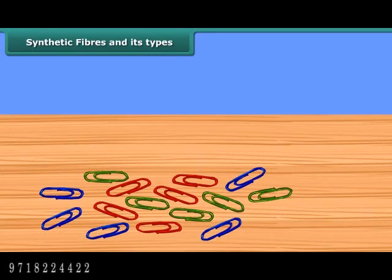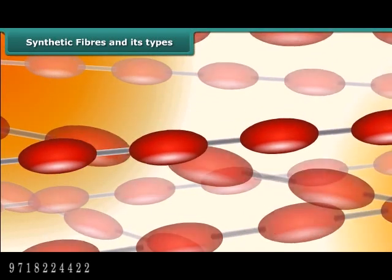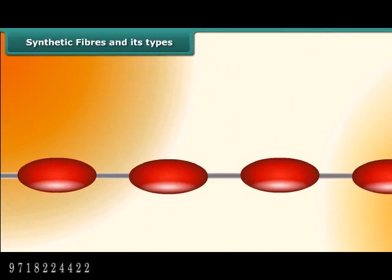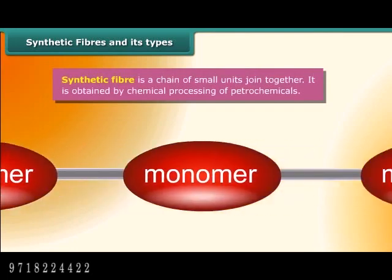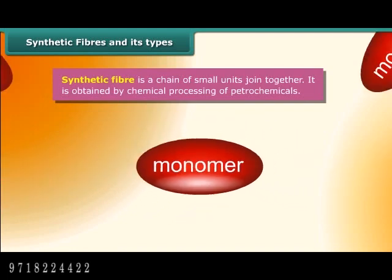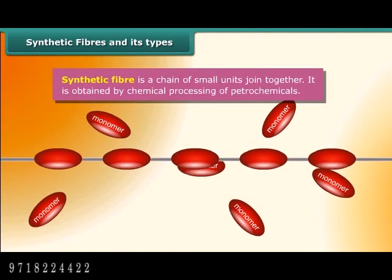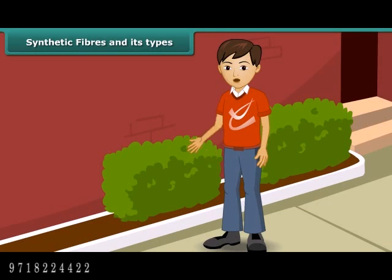Now let us join together a number of paper clips. What do you observe? This chain of paper clips is similar to the organization of a polymer. Here, many small units combine to form a large unit known as a polymer. Each small unit is actually a chemical substance called a monomer. Synthetic fiber is an example of a polymer, and synthetic fibers are obtained by chemical processing of petrochemicals.